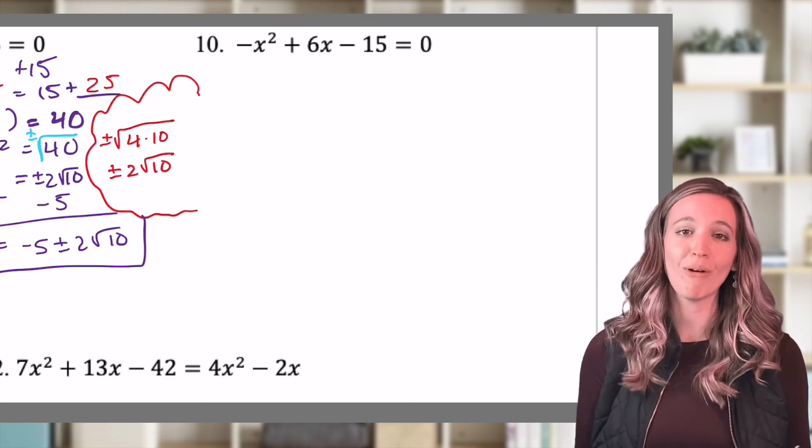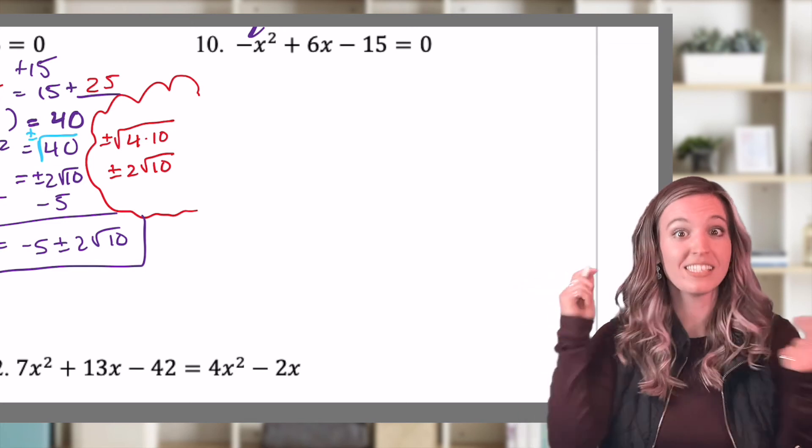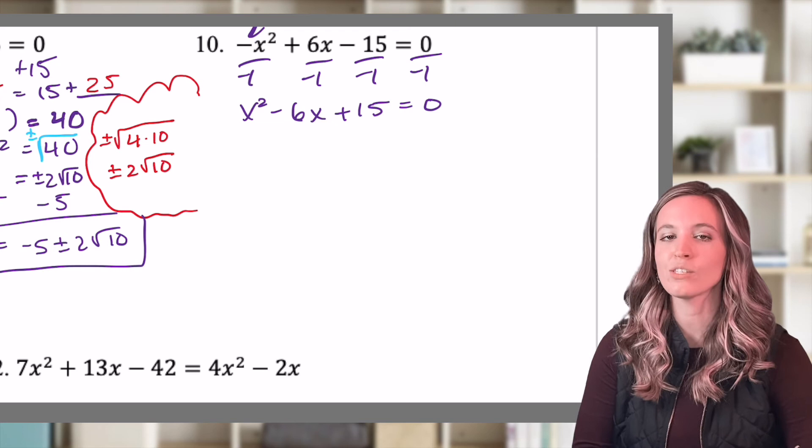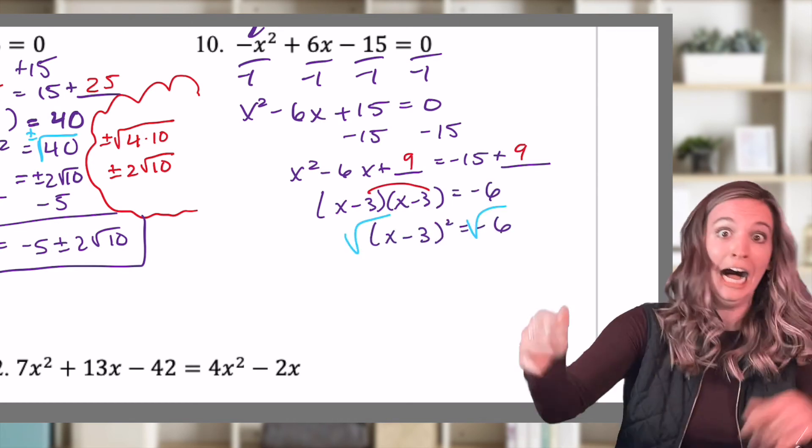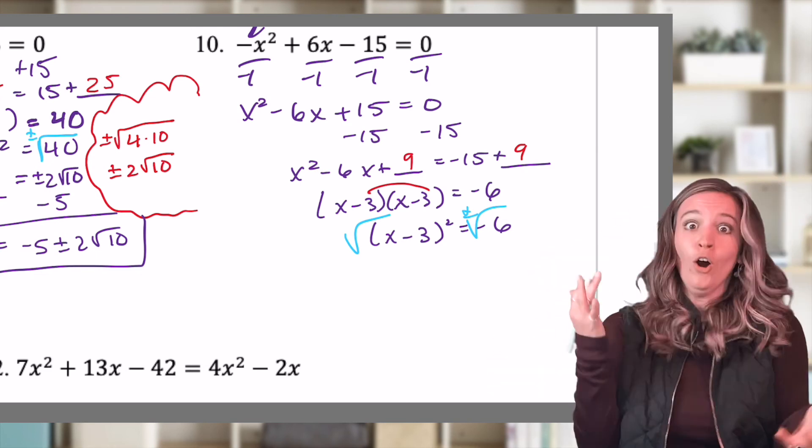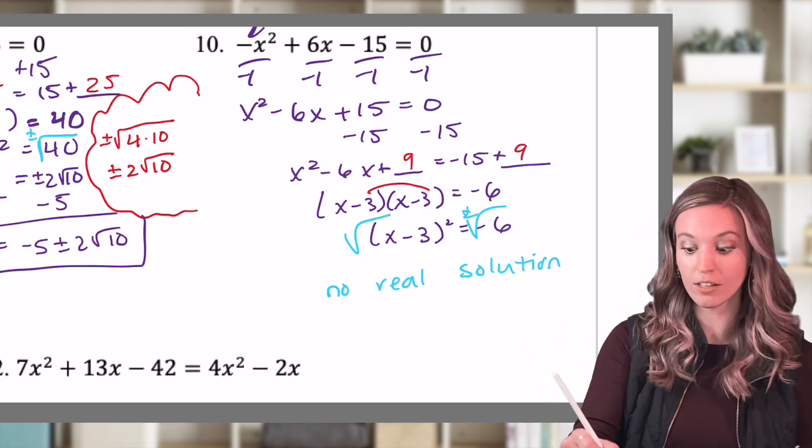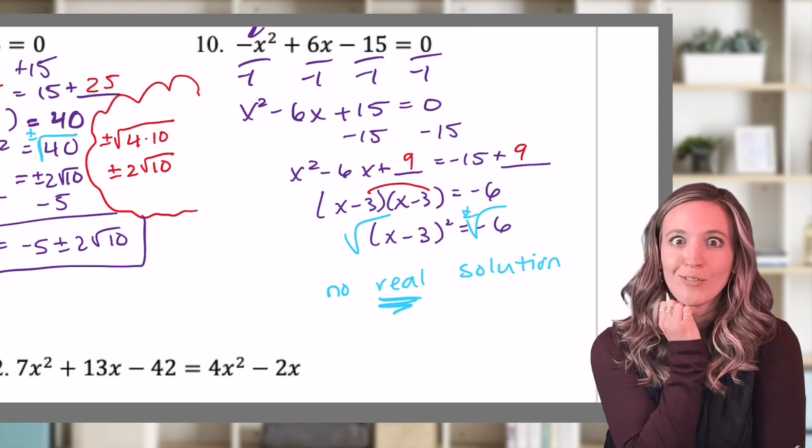Look at this one. I have a not 1 again. Can I divide by that little negative 1? Yes, because this is an equation. So let's divide it out. All right, you got it from here. Go ahead and start completing that square. Look what happened. I'm about to take the square root of a negative 6. We don't know how to do that. So we have no real solution. No real. Oh, so the solution's outside the set of real numbers.